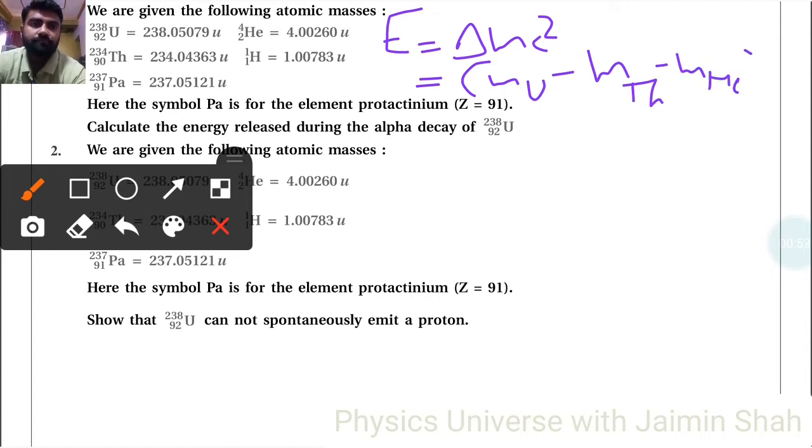So m uranium minus m thorium minus m helium into c squared. So is equal to all these mass differences: 238.05079 minus 234.04363 minus 4.00260.